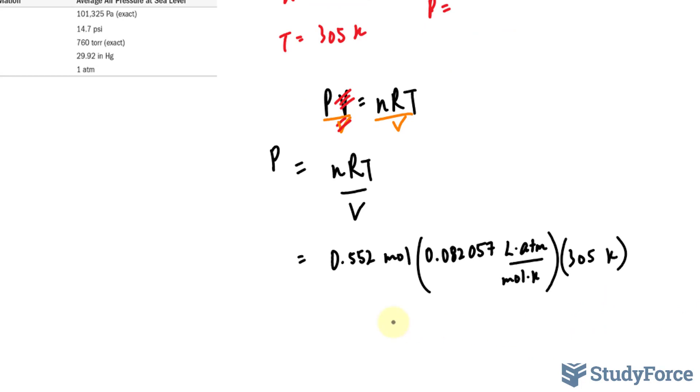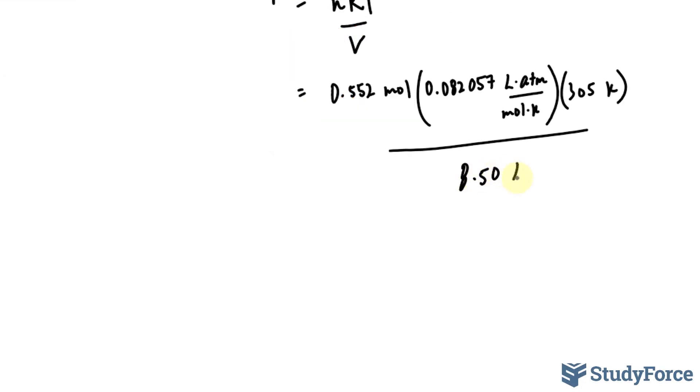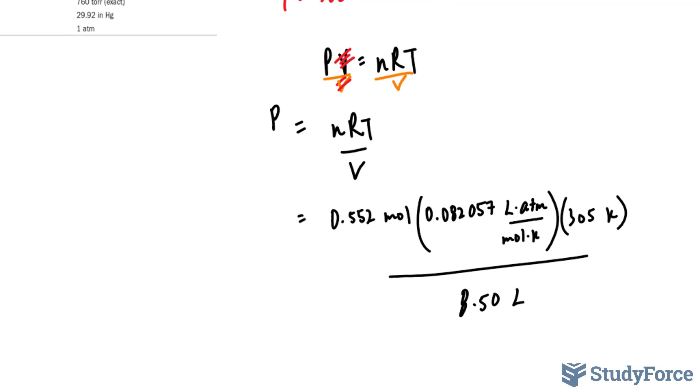And this is being divided by the volume, which is 8.50 liters. Let's see how all of these cancel out. The moles cancel out, the Kelvin cancels out, the liters will cancel out, leaving us with ATM.